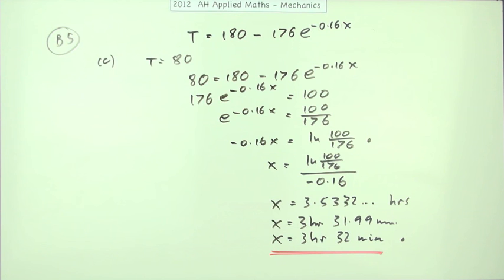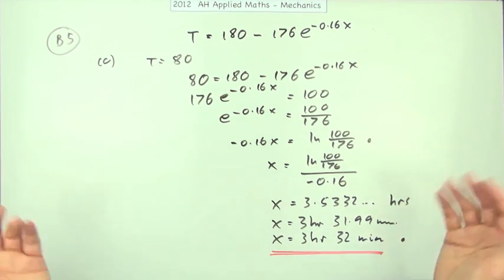There were three marks for this part. The first mark was for substituting t equals 80 and k equals 0.16. The second was for reaching the logarithmic equation, and the third was for converting the decimal hours into hours and minutes.